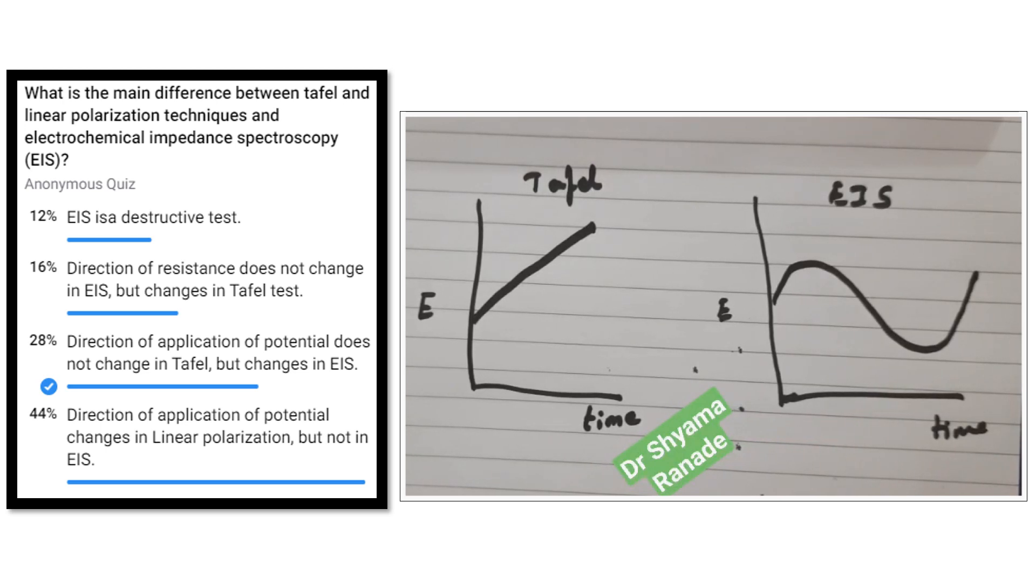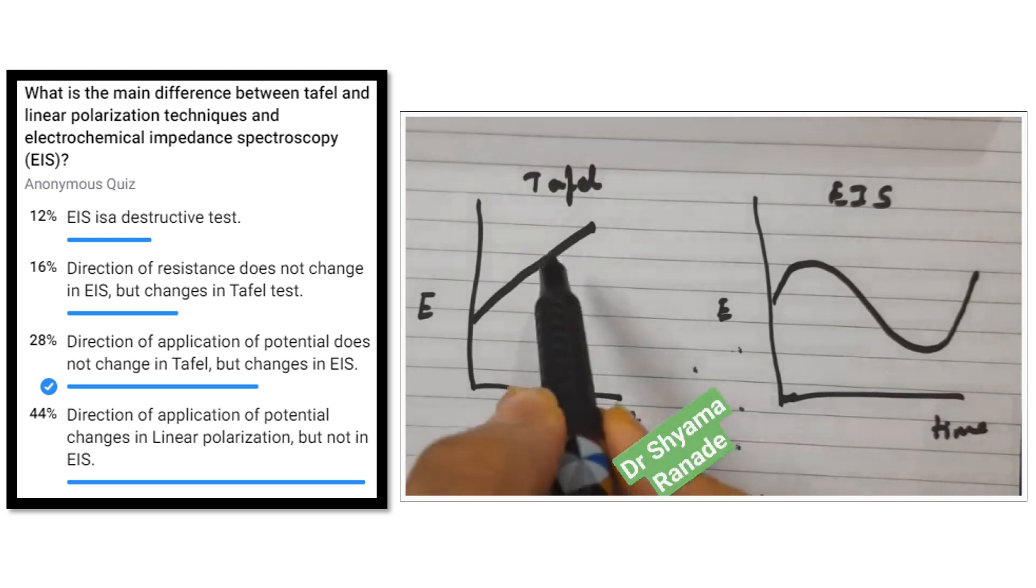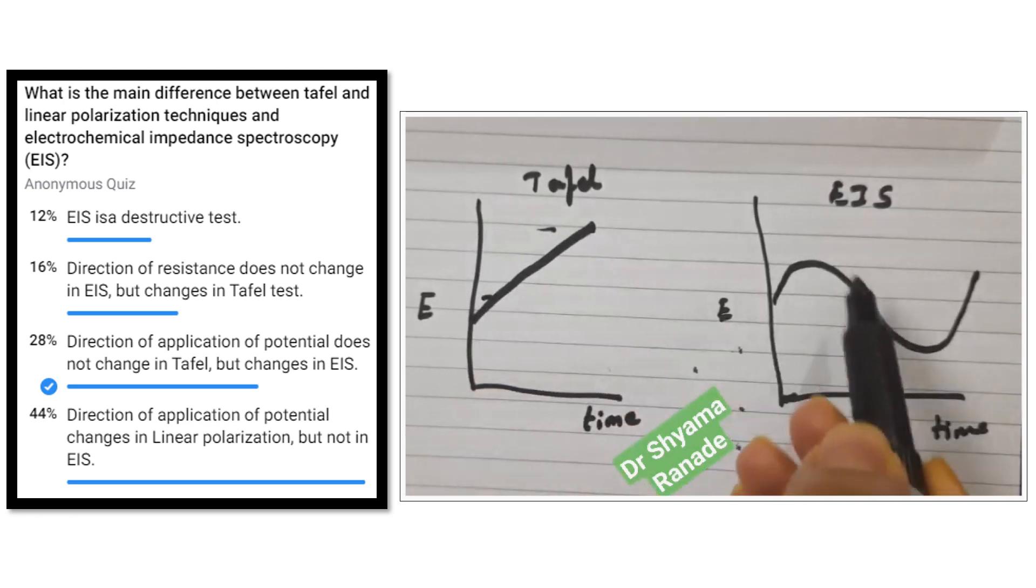So the next question is what is the difference in these two techniques with respect to the magnitudes of the potentials used in these two techniques.